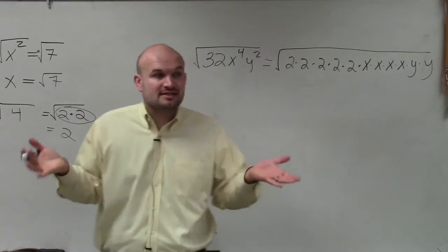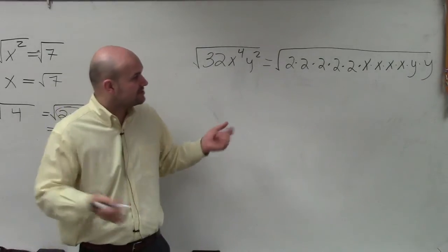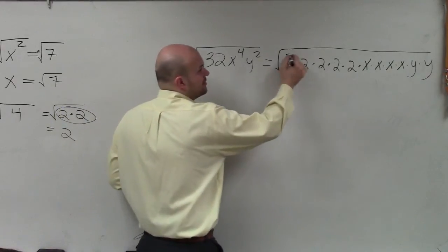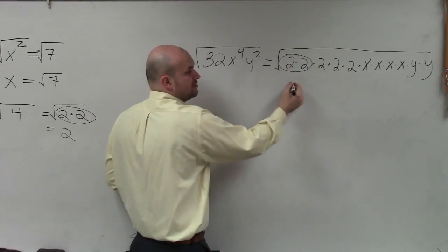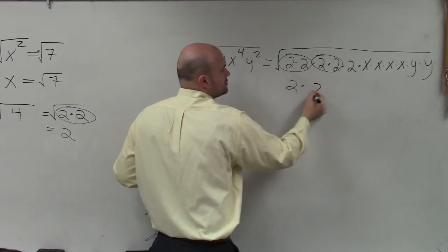It's just broken down into the product of the prime terms and prime factors. We know we can take the square root of pairs of numbers. The square root of 2 times 2 is just 2. Square root of 2 times 2 is 2.